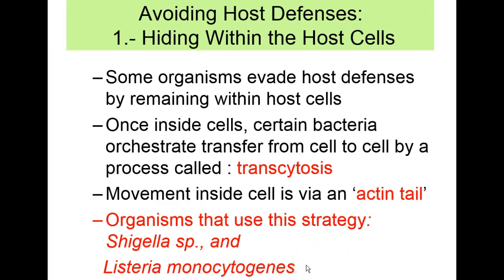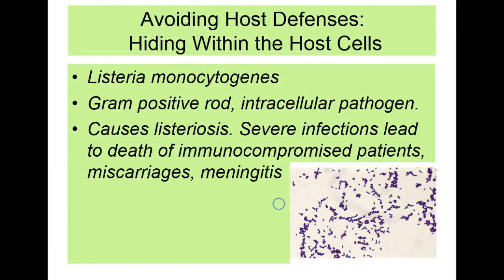Listeria monocytogenes is another organism which can hide within host cells and use transcytosis to propel itself from one cell to the next. Listeria monocytogenes is a gram-positive rod. It is an intracellular pathogen. It causes listeriosis, which is a severe infection that can lead to death of immunocompromised patients, miscarriages, and meningitis.